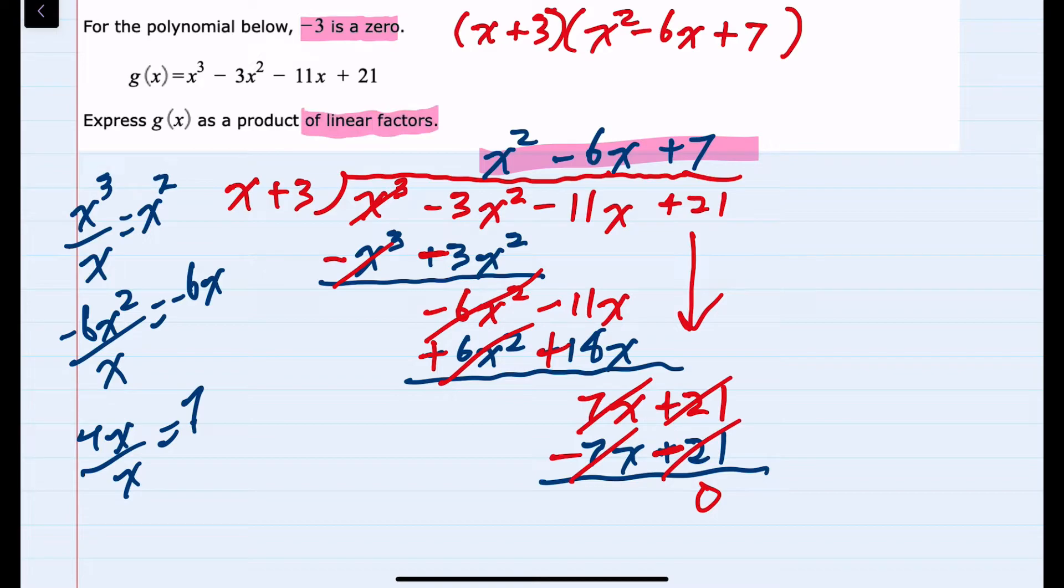However, we were asked to write the factors as all being linear. So I would need to continue by factoring this quadratic to two linear terms. However, if I were to try to factor that by trial and error or the AC method, neither of those are going to work. But I can always use the quadratic formula to find the zeros.